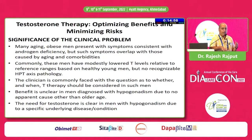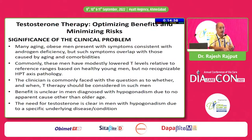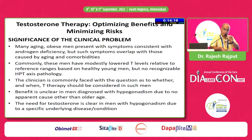We have to understand that after 40 years of age, with each passing year there is a decline in testosterone in healthy men by 1.2%, and SHBG — sex hormone binding globulin — increases by 1.2%. So when you measure total testosterone it may be found to be normal, but bioavailable testosterone, which is actually important for function, is decreasing every year after age 40.